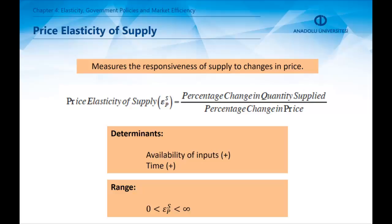The last type of elasticity is price elasticity of supply. It measures the responsiveness of supply to price changes. It is calculated with the formula: percentage change in quantity supplied divided by percentage change in price.